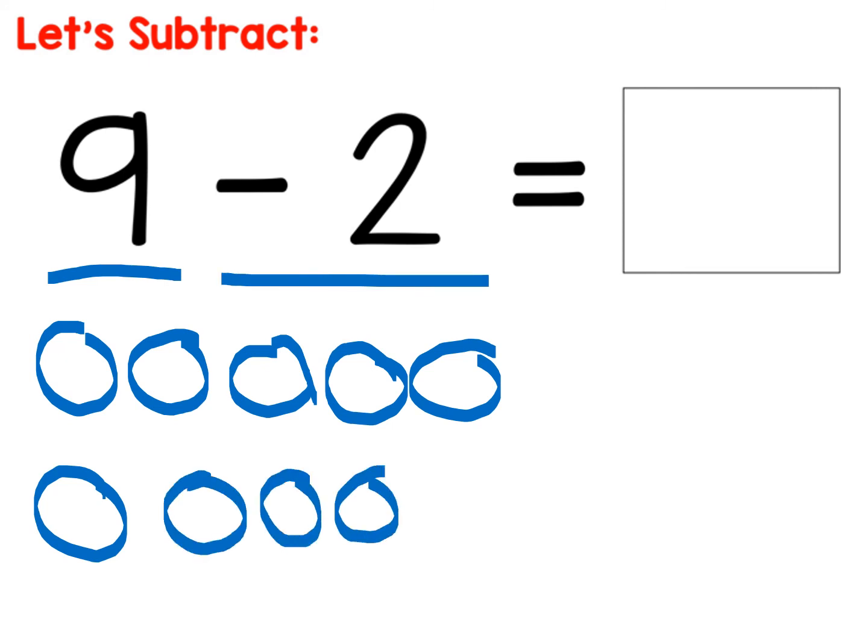Now minus two, that means I have to X out two. One, two. And then I can count how many are left. One, two, three, four, five, six, seven. So nine minus two equals seven. And you wouldn't have to write the numbers on top. I just wanted to do that to show you how I was counting.